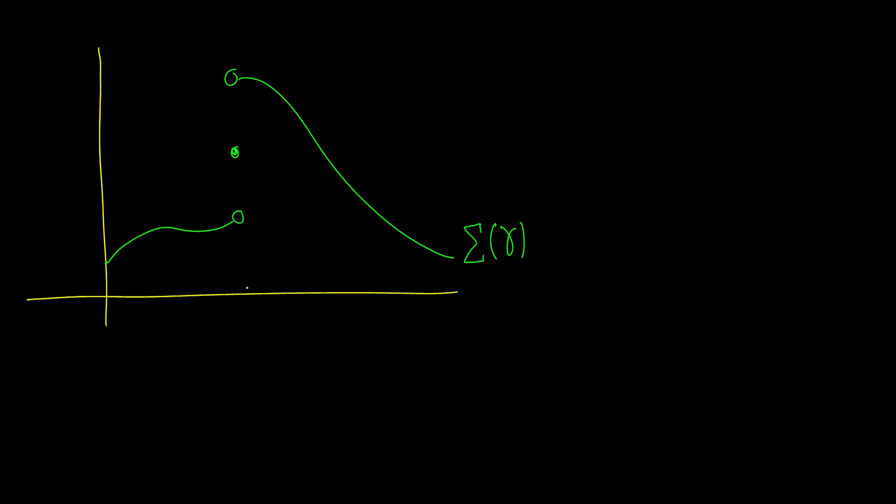we'll call this sigma of gamma instead of f of x, because I don't know, this is cool names. Okay, so we want to look at this point a, we're going to call this point one, two, and three. So here are the questions I want. I just want you to find the limit as x approaches a of this cool function we have here, sigma of gamma. That's all I want you to find. So pause the video, see if you can find it, and we'll come back in a second.